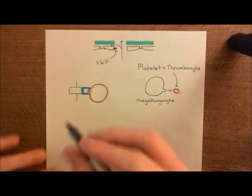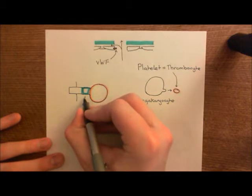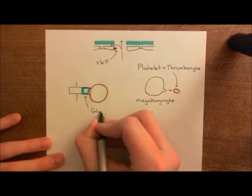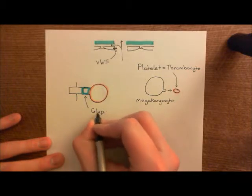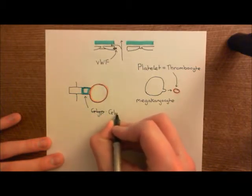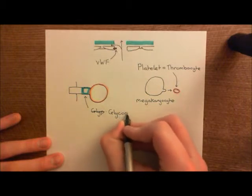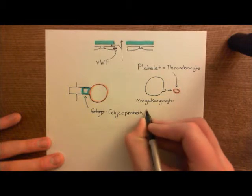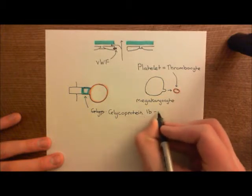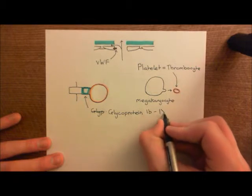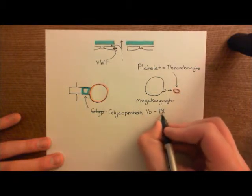This protein has a rather fantastic name. It's known as glycoprotein 1B-IX-V. Glycoprotein 1B-IX-V. It's a grandiose protein, so it's got its numbers in Roman numerals, IX-V.